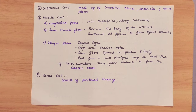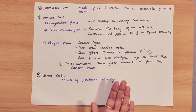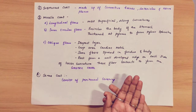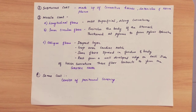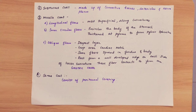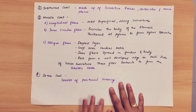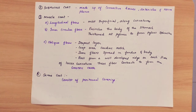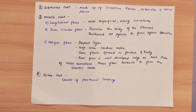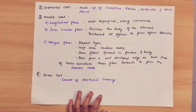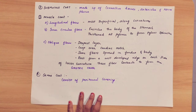Coming to the submucous coat: beneath the mucous coat, the submucous coat is present, which contains connective tissues, arteries, and a nerve plexus. Coming to the next layer — the muscle coat — in the muscle coat there are three types of muscle fibers.